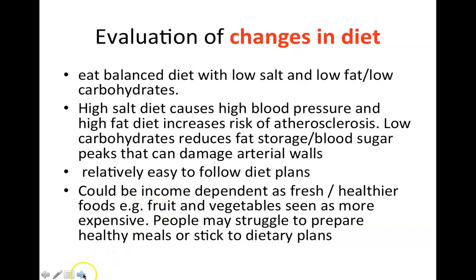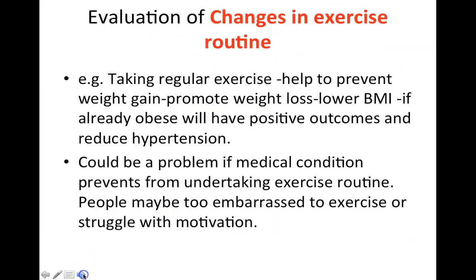That's evaluating changes in diet, which will help reduce the risk of hypertension. Evaluation of changes in exercise routine — taking regular exercise helps to prevent weight gain, promotes weight loss, and if someone is already obese, will have positive outcomes and reduce hypertension. However, changing exercise routine could be a problem if someone has a medical condition preventing strenuous exercise. If you actually have hypertension, you want to avoid strenuous exercise straight away — start with walking and build up gradually. Some people may also be too embarrassed to exercise or struggle with motivation.